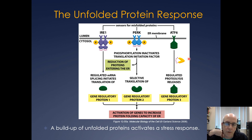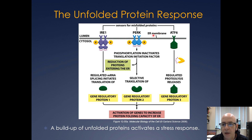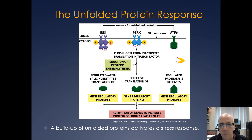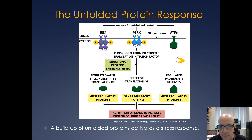When a number of unfolded proteins build up in the ER, the cell undergoes what's called the unfolded protein response (UPR). There are sensors in the ER membrane that detect this buildup: IRE1, PERK, and ATF6. When unfolded proteins accumulate in the ER, these proteins get activated through cross-phosphorylation events. IRE1 is involved in regulating splicing of a messenger RNA that allows a gene regulatory protein to be properly translated, which then enters the nucleus and upregulates expression of ER chaperones and proteins needed for folding.